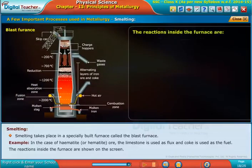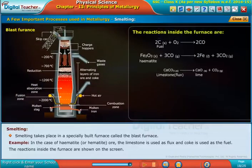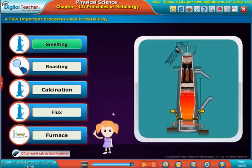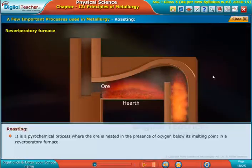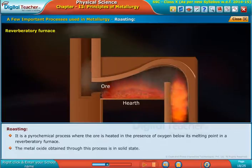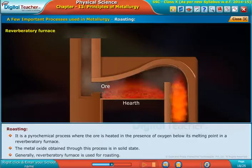Roasting: It is a pyrochemical process where the ore is heated in the presence of oxygen below its melting point in a reverberatory furnace. The metal oxide obtained through this process is in solid state. Generally, reverberatory furnace is used for roasting.